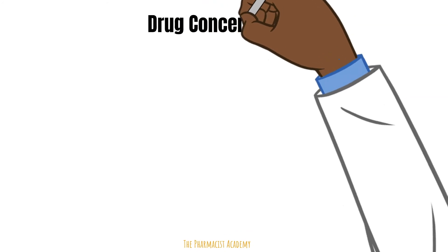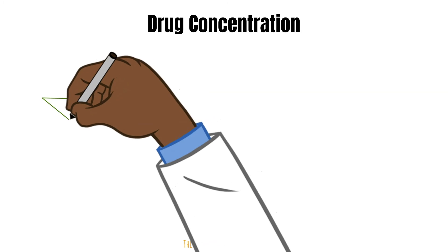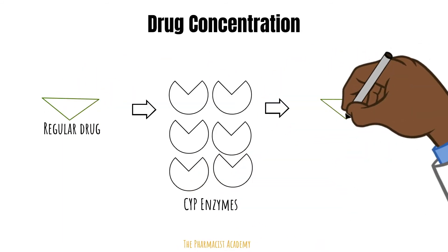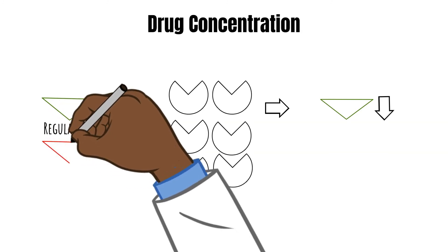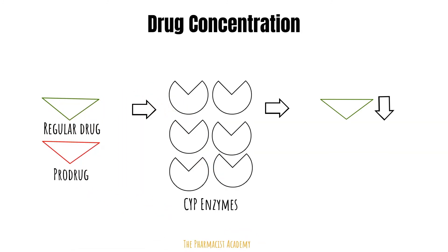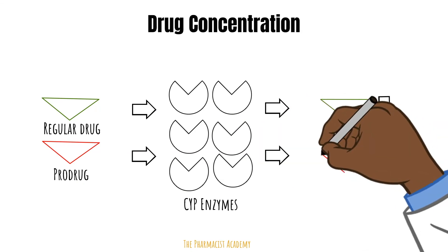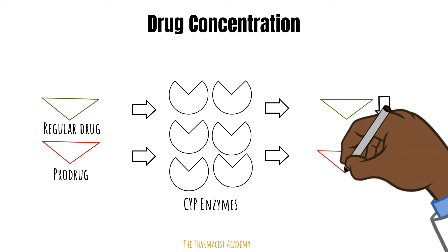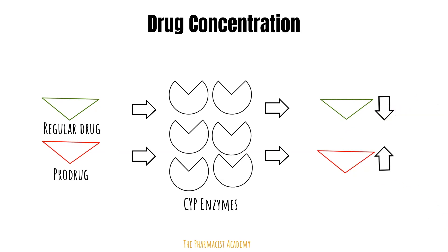Before I conclude, I want to clarify something. For regular drugs, when they go through the CYP enzymes during first pass metabolism, the drug concentration is reduced. But this is not the same for pro-drugs. Pro-drugs are inactive, so once they go through the CYP enzymes, that's when they become active — meaning you actually have more of the active drug.